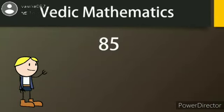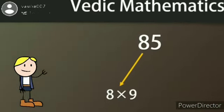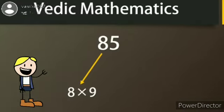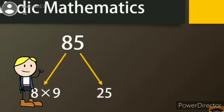First, we will take a number 85. Then, multiply the 10th place number with its next number, that is 8 multiplied by 9. We write this in left side.